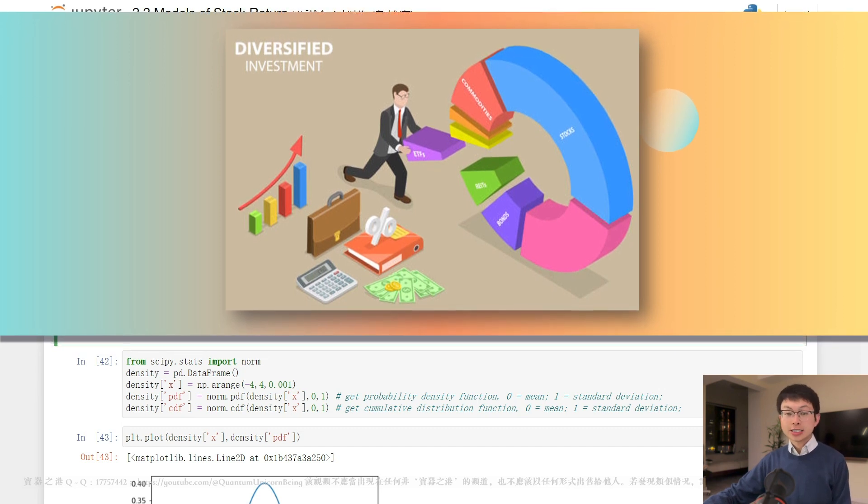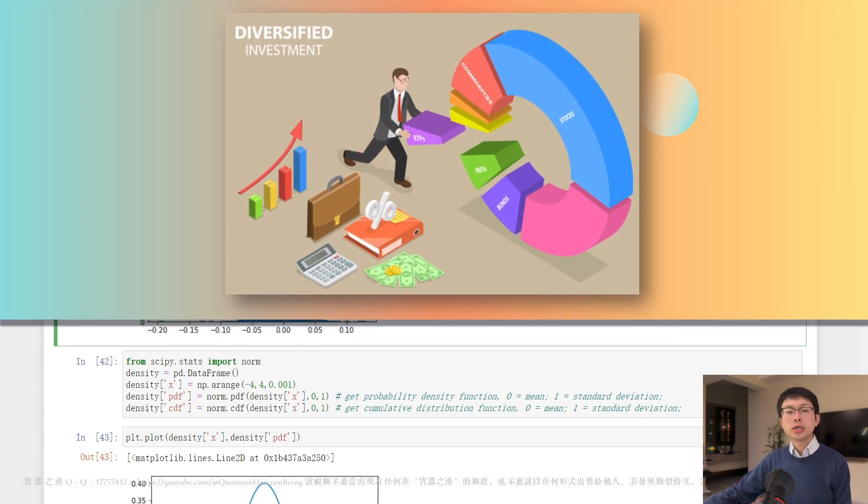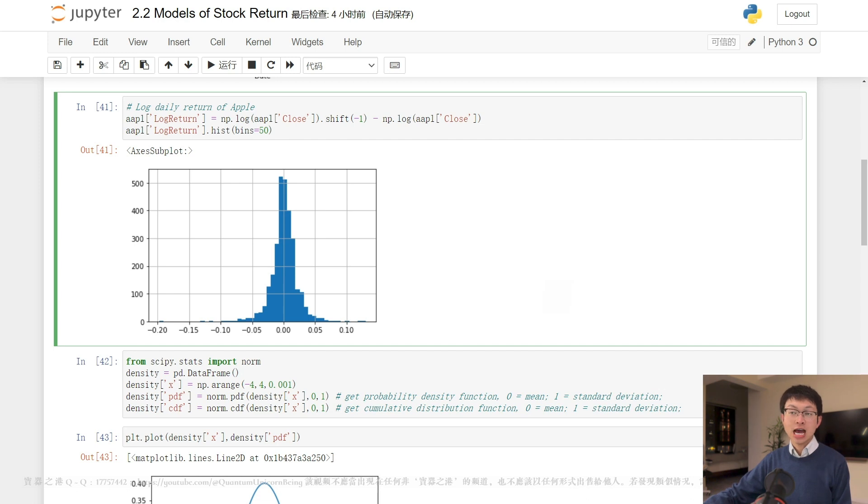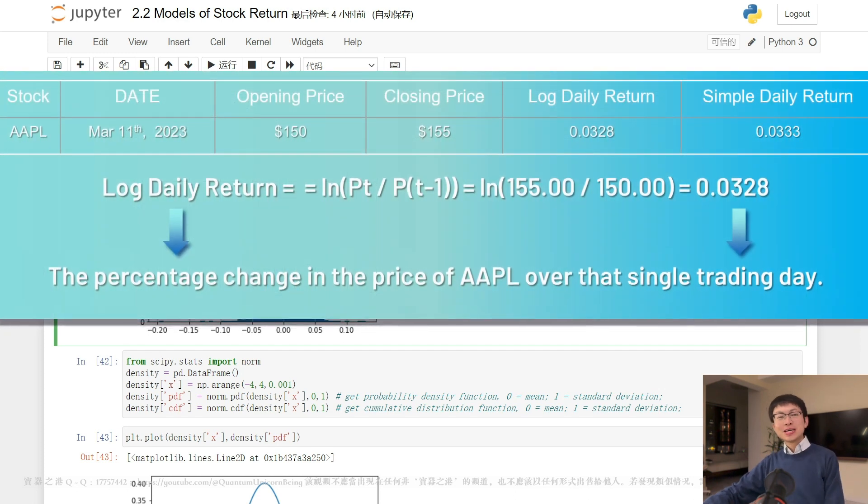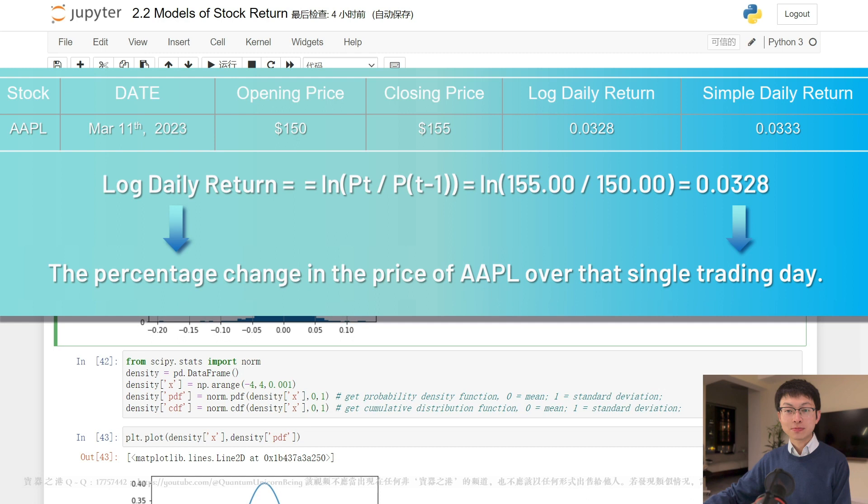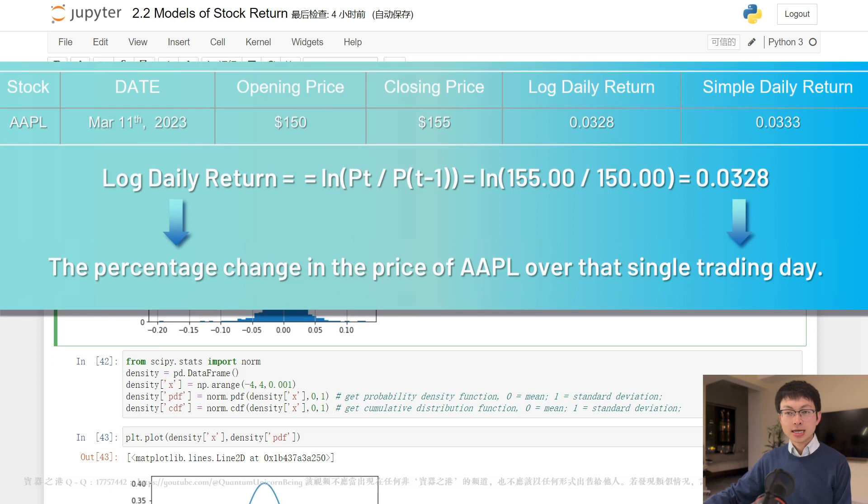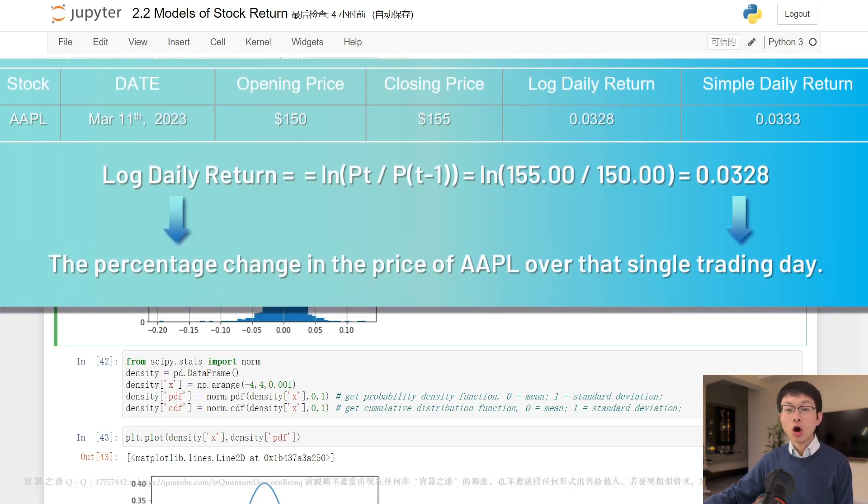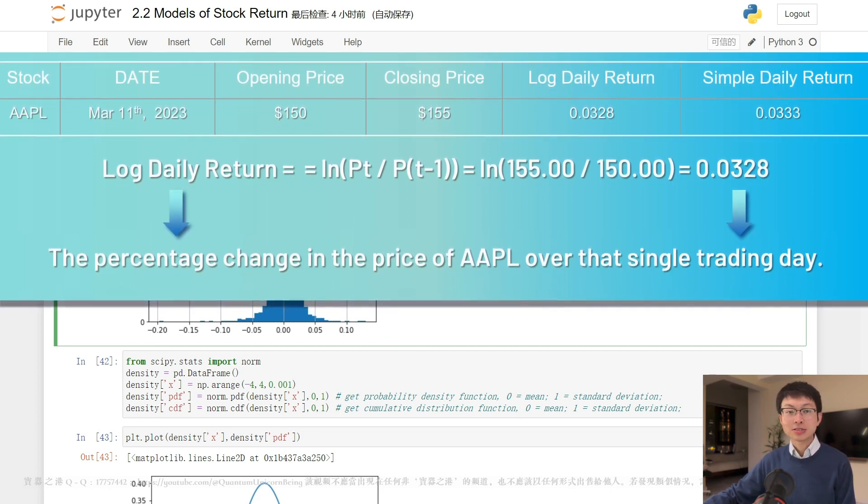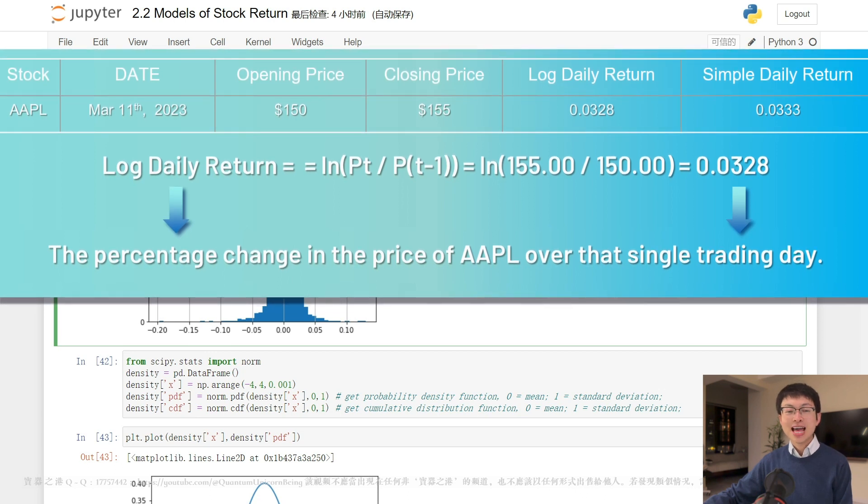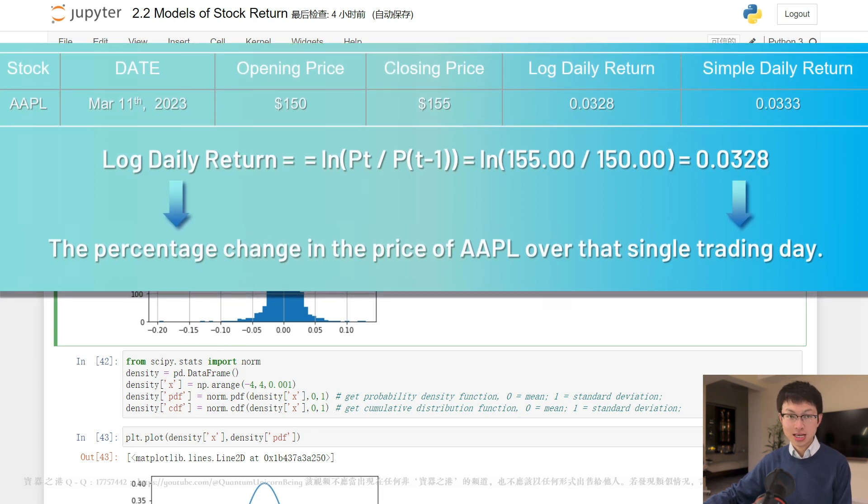Let's use the historic stock data of Apple as an example. Suppose we want to calculate the log daily return of Apple for the trading day of March 11th, 2023. We can obtain the opening and closing price of Apple for that day from a financial data provider. For the sake of this example, let's say that the opening price of Apple on March 11th was 150 and the closing price was 155. And let's use the formula to calculate the log daily return of Apple on March 11th, 2023.